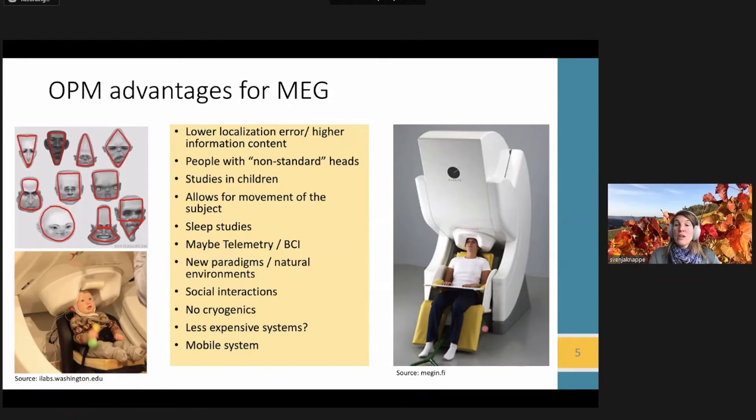And so if you could define new paradigms that take advantage of this possibility to have much more natural movements, those can open new studies and new insights. Social interaction studies can benefit because you could put the system on several people while they're interacting with each other in the same room. Because you don't need cryogenics, it could also lead to less expensive systems that can operate in much smaller rooms and maybe person-sized shields. And you can think about putting them on mobile units where now you can bring the system to the patient rather than the other way around. So you can see there's a long list of possibilities that could really enable new studies and new science.